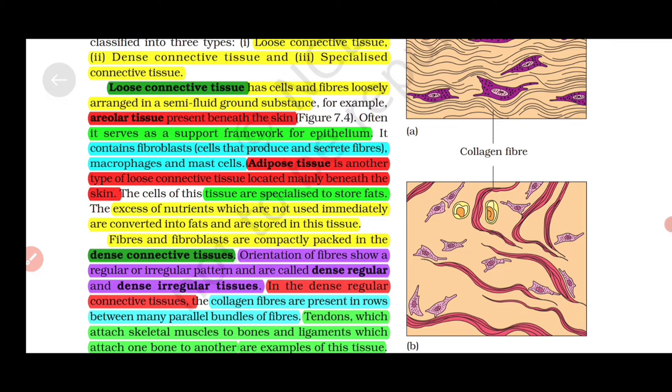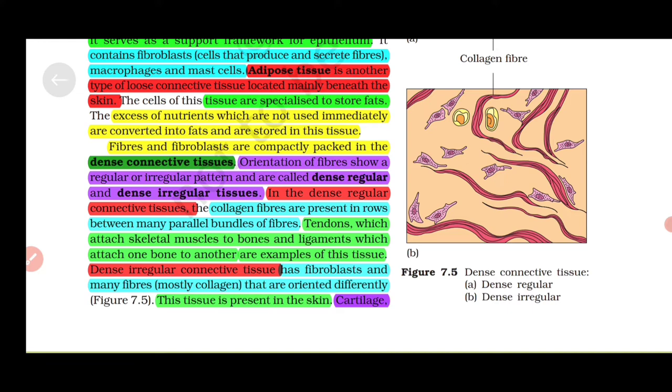Fibers and fibroblasts are compactly packed in dense connective tissues. Orientations of fibers show regular or irregular patterns and are called dense regular and dense irregular tissues. In dense regular connective tissues, collagen fibers are present in rows between many parallel bundles of fibers. Tendons, which attach skeletal muscles to bones, and ligaments, which attach one bone to another, are examples. Dense irregular connective tissue has fibroblasts and many fibers, mostly collagen, that are oriented differently. This tissue is present in the skin.